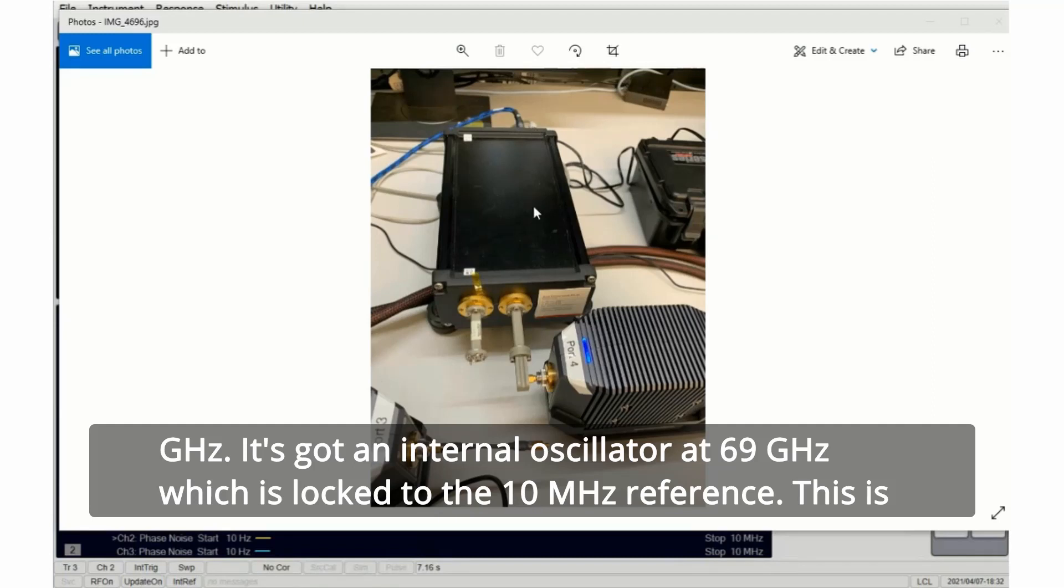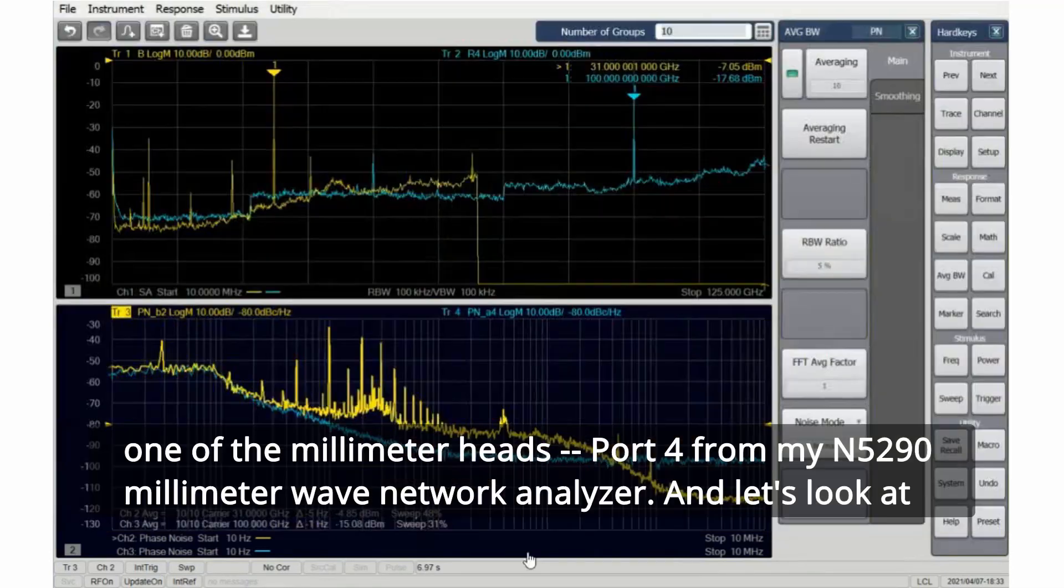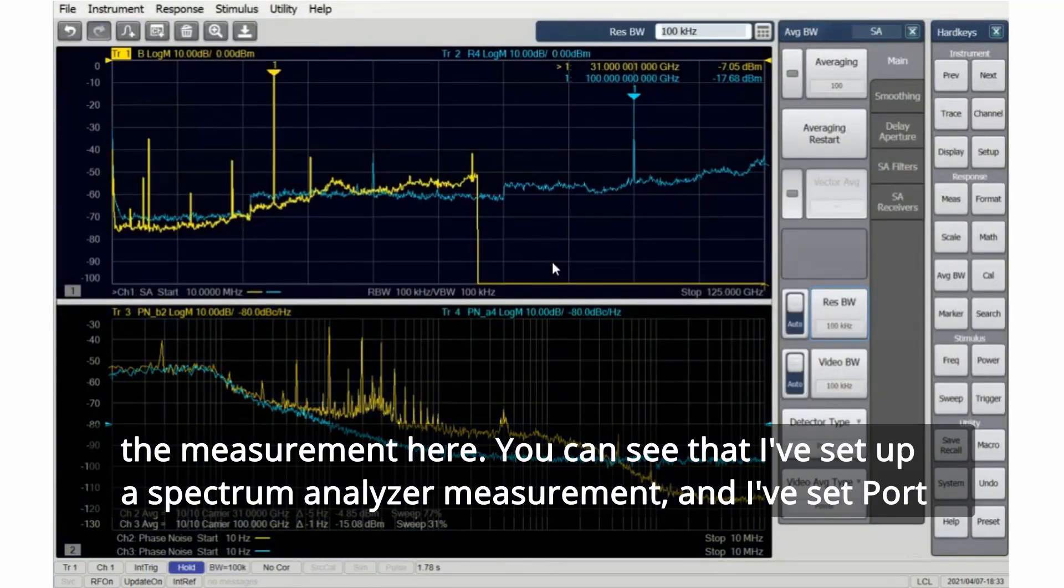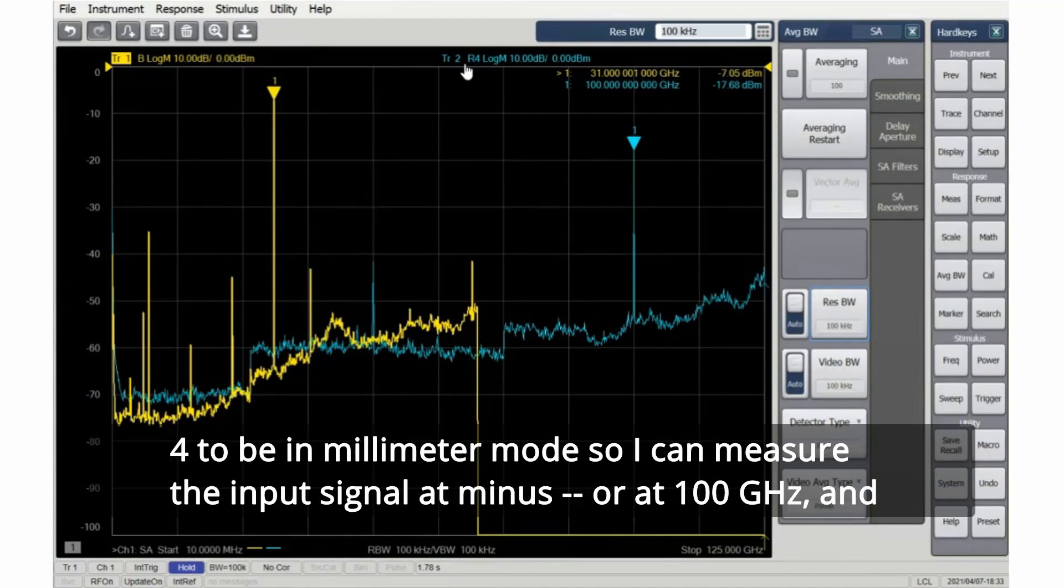This is one of the millimeter heads, port 4, from my N5290 millimeter wave network analyzer. Let's look at the measurement here. You can see that I've set up a spectrum analyzer measurement and I've set port 4 to be in millimeter mode so I can measure the input signal at 100 gigahertz.